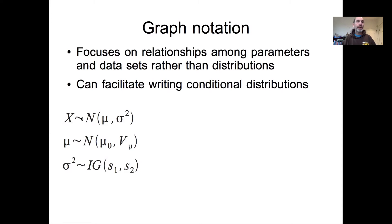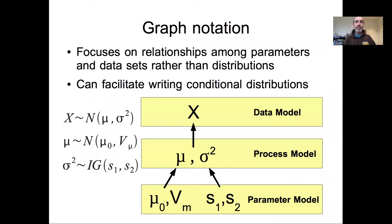If we think about something as simple as fitting a mean to a dataset X — fitting some mean and variance with a prior on the mean and a prior on the variance — we can notate this graphically: in our data model we have X, our data; our process model is just the mean and variance; and our parameter model describes the prior parameters that inform that mu and sigma.